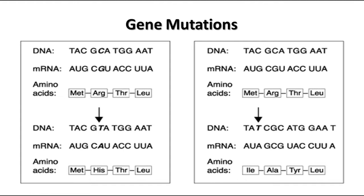One amino acid might be more hydrophilic or more hydrophobic than another. It might not hydrogen bond with adjacent ones in the way it's supposed to, and so it can totally change the shape of the protein. As we've learned, when you change the shape of a protein, you're changing the way it works. So this would be a substitution mutation.